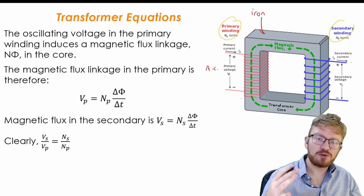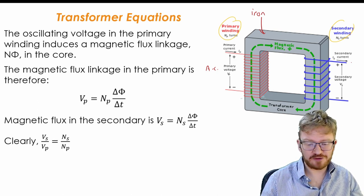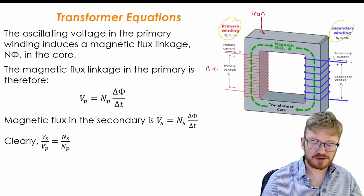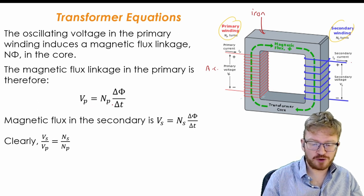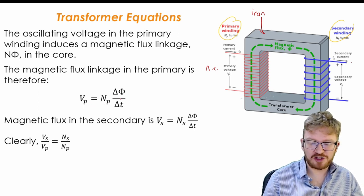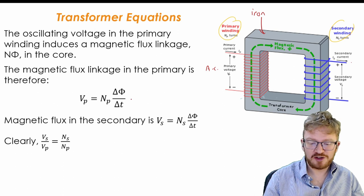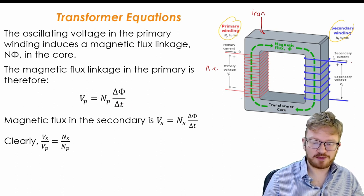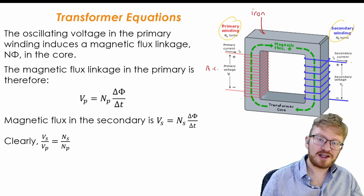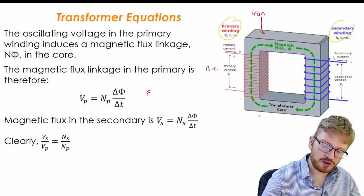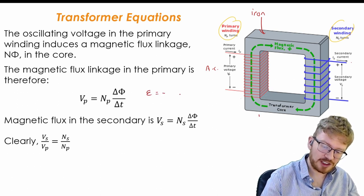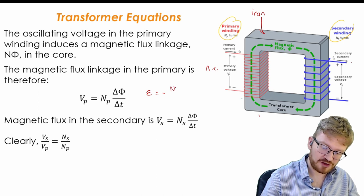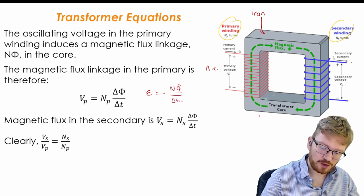So if I was to write that now into the more A-level method, the first thing I'm going to say is that the voltage on the primary will be the number of coils on the primary times the magnetic flux divided by time taken. Why is that? Well, because I already know that an induced EMF is equal to minus magnetic flux linkage over time.